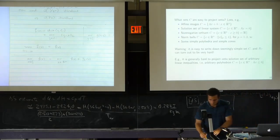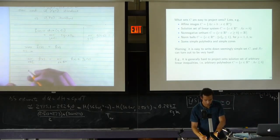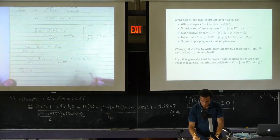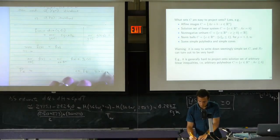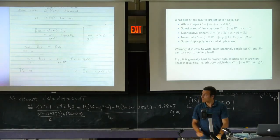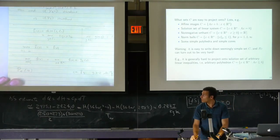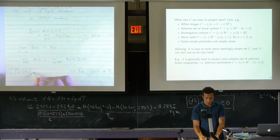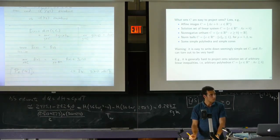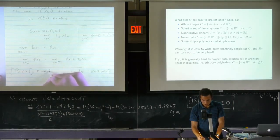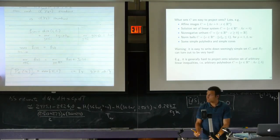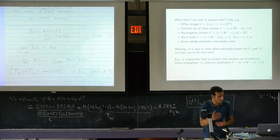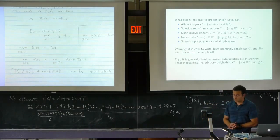For the non-negative orthant C = {y : y_i ≥ 0 for all i}, the projection is easy: the i-th component of proj_C(x) is just max(x_i, 0). If we're on the negative side, set it to zero; otherwise return the point as-is.